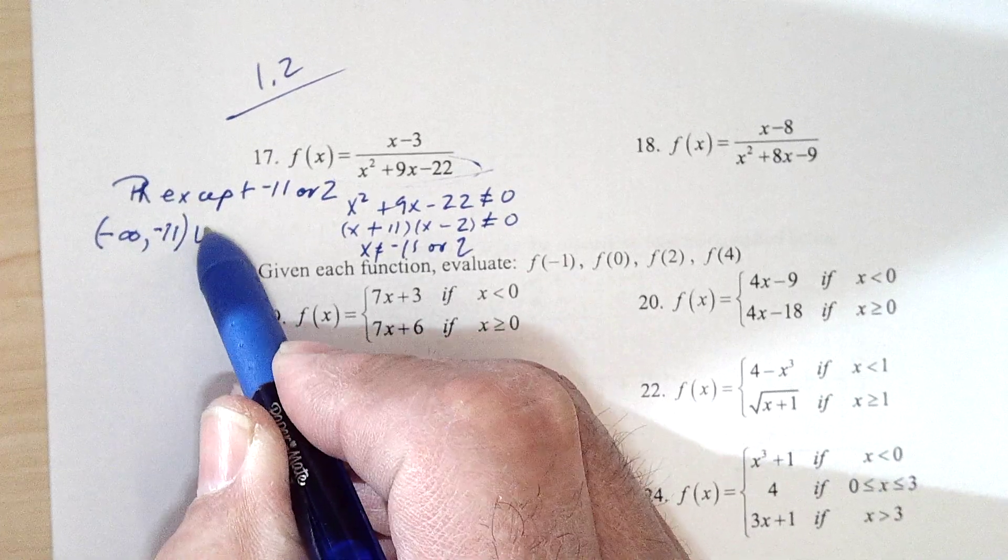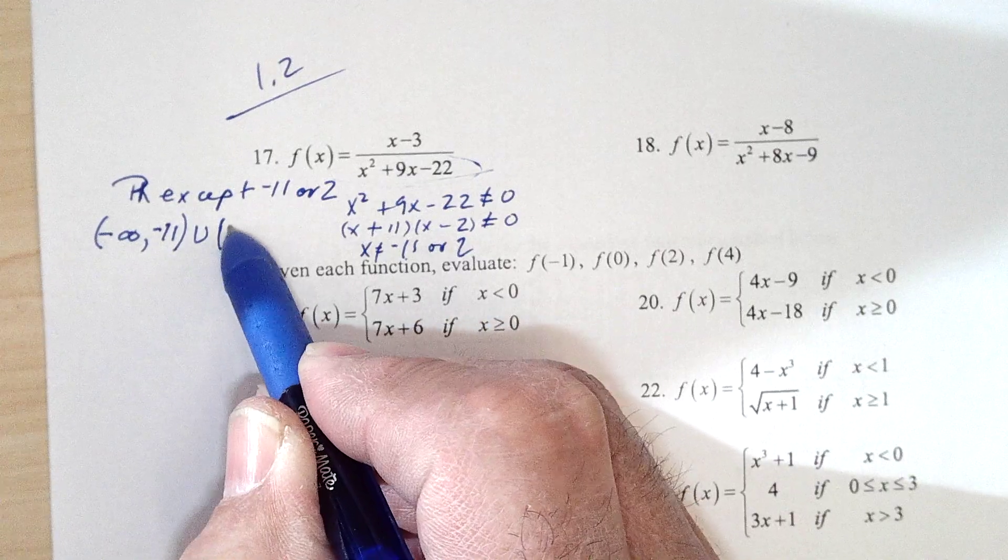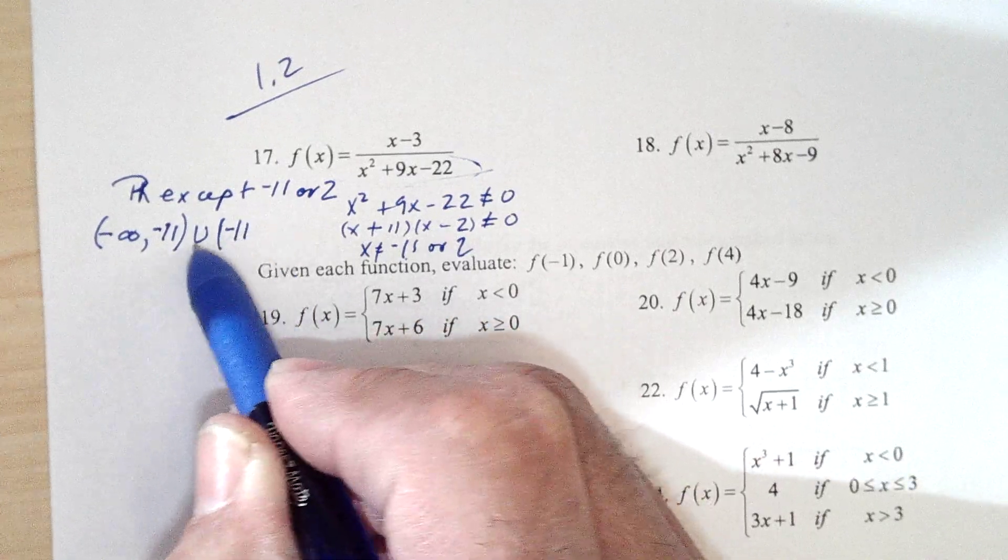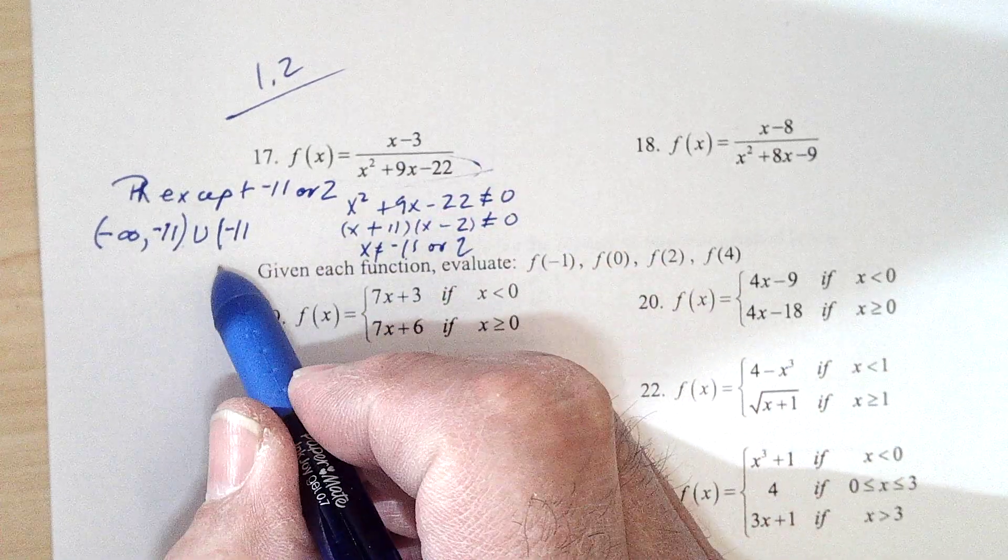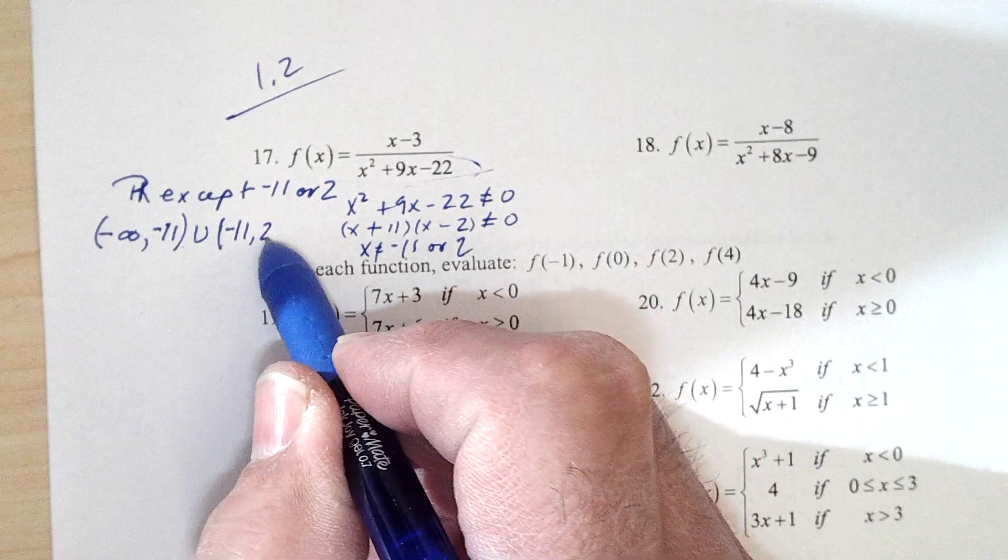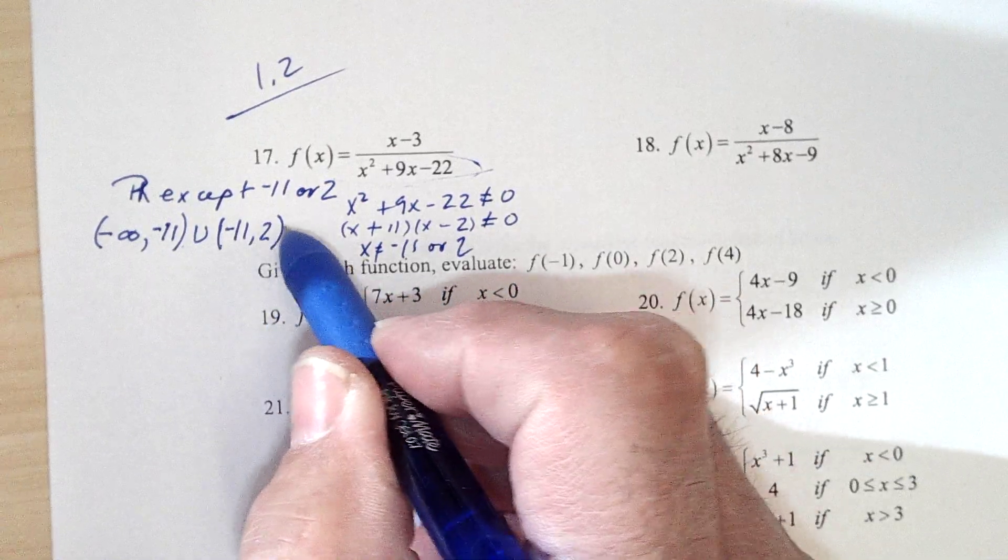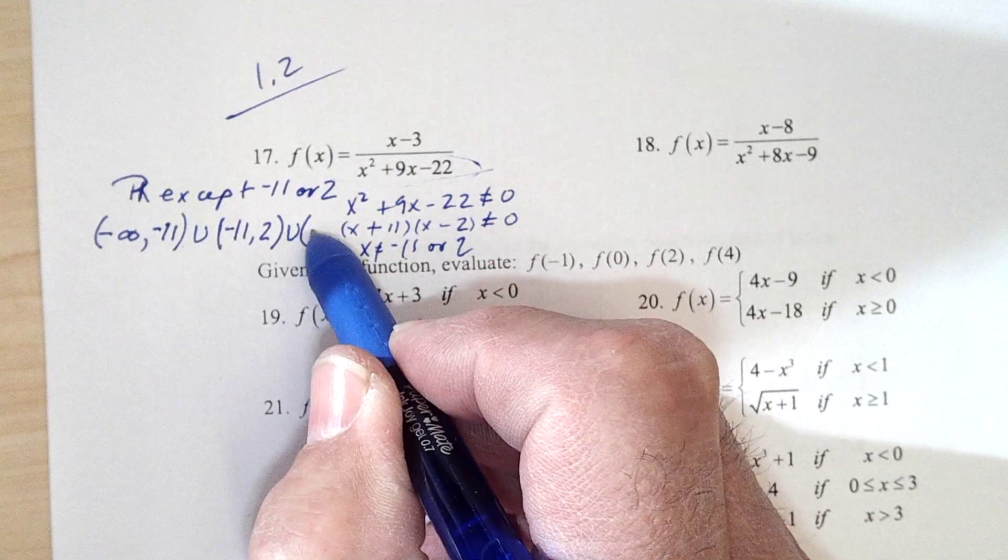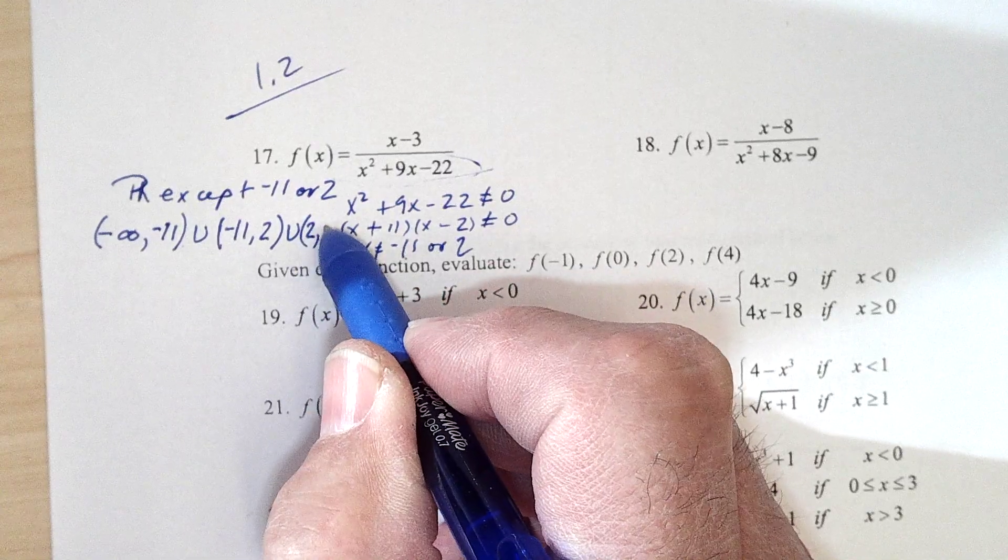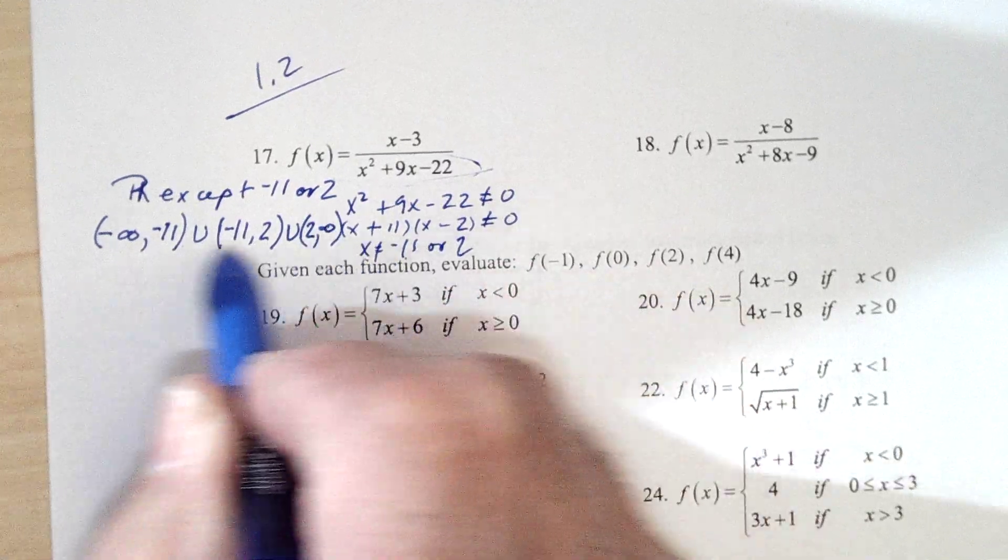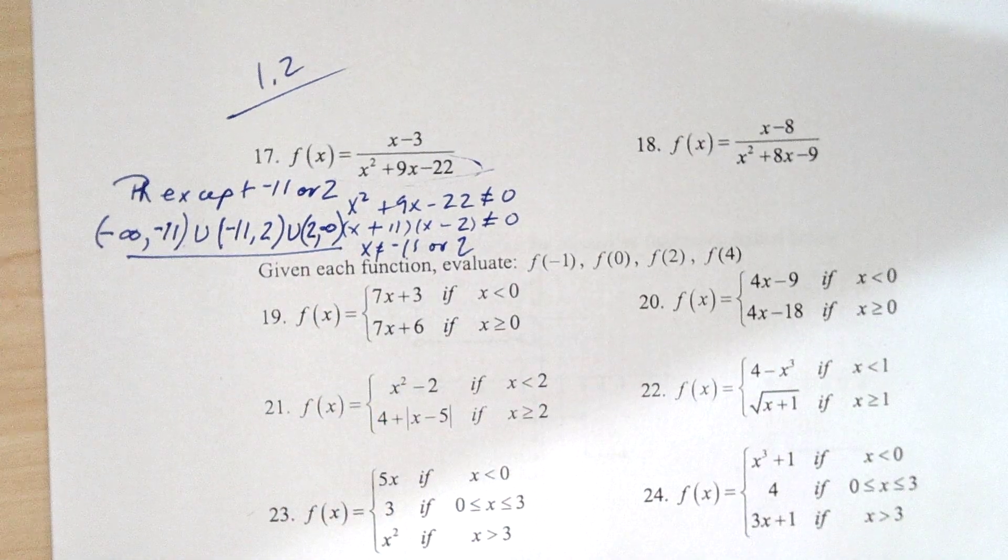Or you might write it in interval notation from negative infinity up to negative 11, union from negative 11, not including, no brackets, up to 2, not including 2, union, not including 2, up to infinity. That would be interval notation for it.